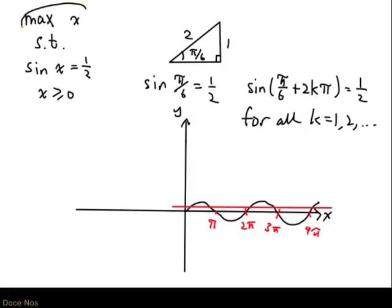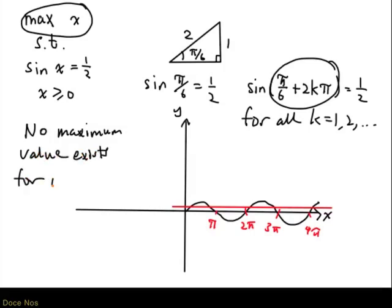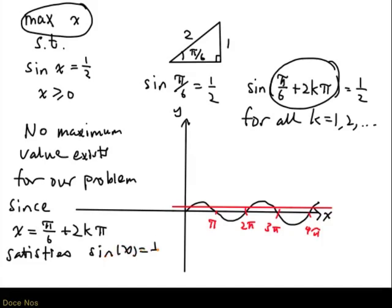Now if we're looking for the maximum possible x such that sin x is one-half, x greater than zero, well we will never find the maximum. Because if you look at the angles that give sin equal to one-half, they can be as large as we want. So what we can say is no maximum value exists for our problem, since x equals π over 6 plus 2kπ satisfies sin x equal to one-half and x greater than zero. So no maximum exists, and we call this problem unbounded.